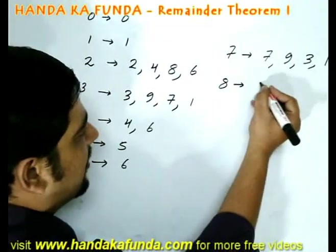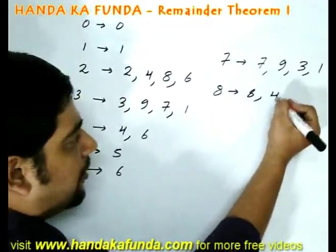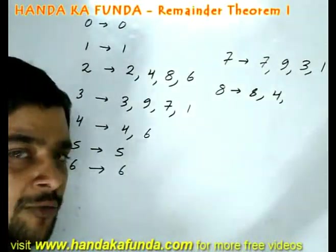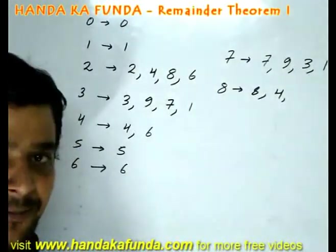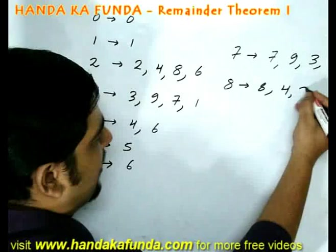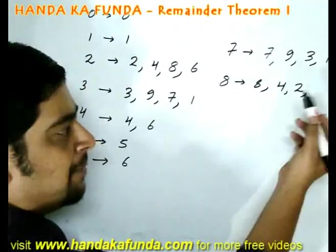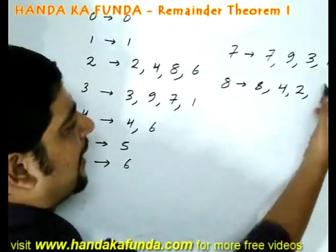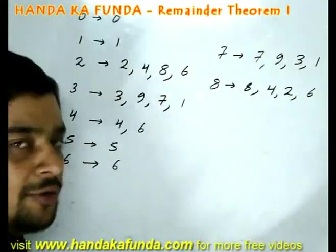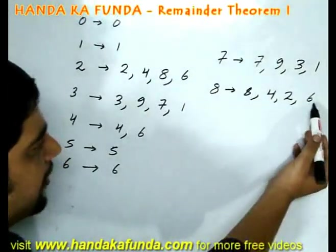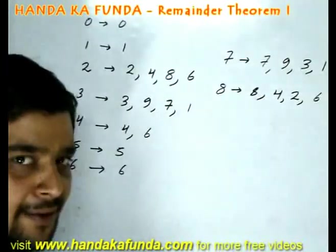Very similarly for 8. 8 square is 64, so 4. Now either do 8 cube or do 4 into 8. What do you find simpler? 4 into 8, which is 32. Either do 8 to the power 4 or just simply do 2 into 8, that is 16. Now you do 8 to the power 5 or do 6 into 8 is 48. And this is my cycle.